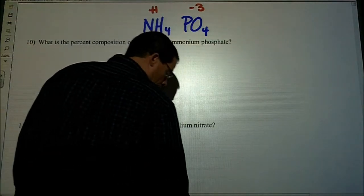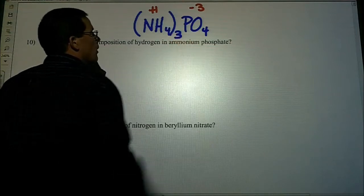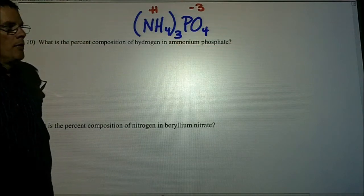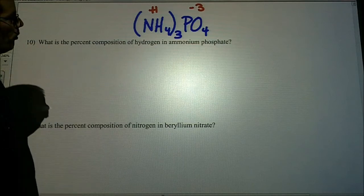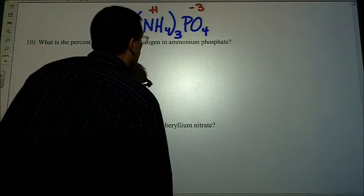If we have a plus 1, minus 3, and we have a poly, we have to make sure that we balance those out. So now we've got three ammoniums and one phosphate. So we have to find the molar mass for this thing.